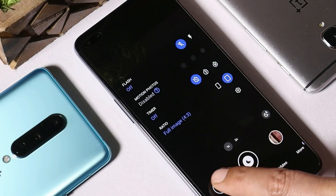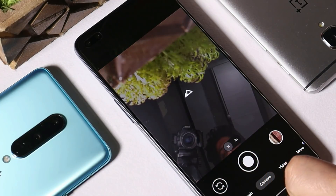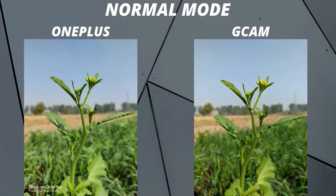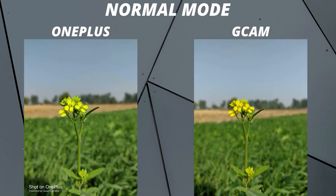Front camera and back camera work fine and I haven't noticed any major issues. Photos clicked in daylight are pretty good with both the OnePlus stock camera and Google Camera, but Google Camera produces more natural colors compared to the stock camera. The stock camera slightly overexposes the shots, so if you have good lighting conditions, even the stock camera produces good images.